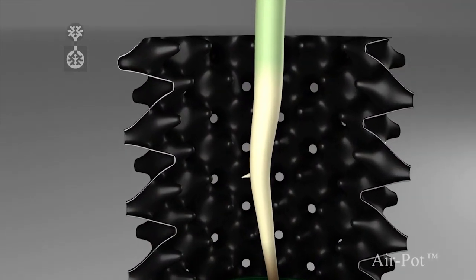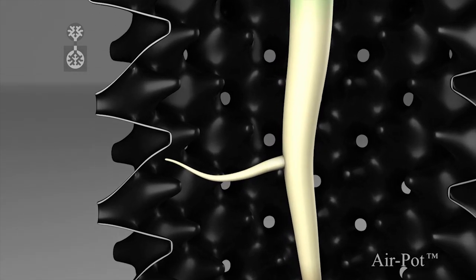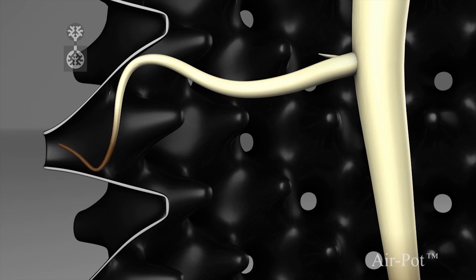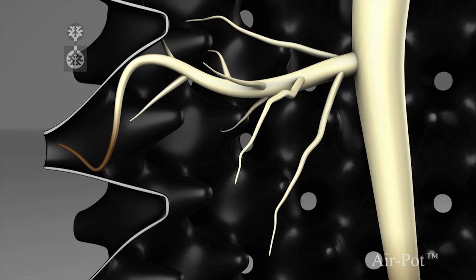Starting with the tap root, the shape of the pot wall guides every root towards an air hole, where the increased air in the soil dehydrates the tip. This prunes it and stimulates root branching right back to the stem.